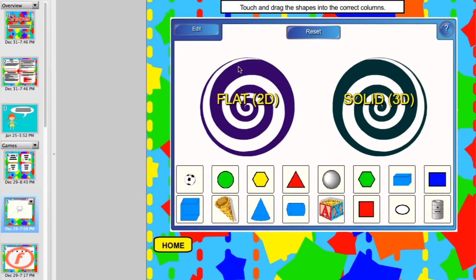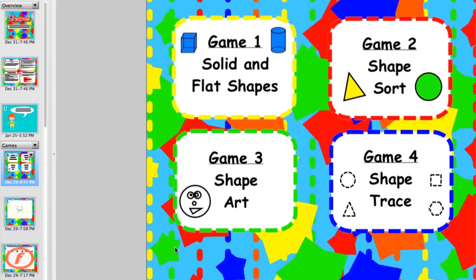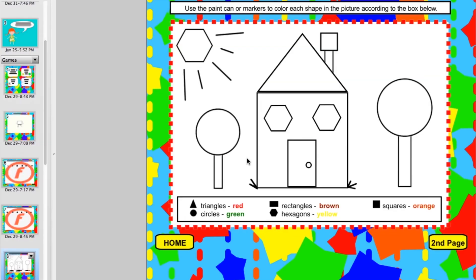This shapes file provides four different games. In the first game students will place flat shapes into the right tunnel and then solid shapes in the other one. If they're incorrect it will bounce out. In the next game students will color this picture according to the shapes.